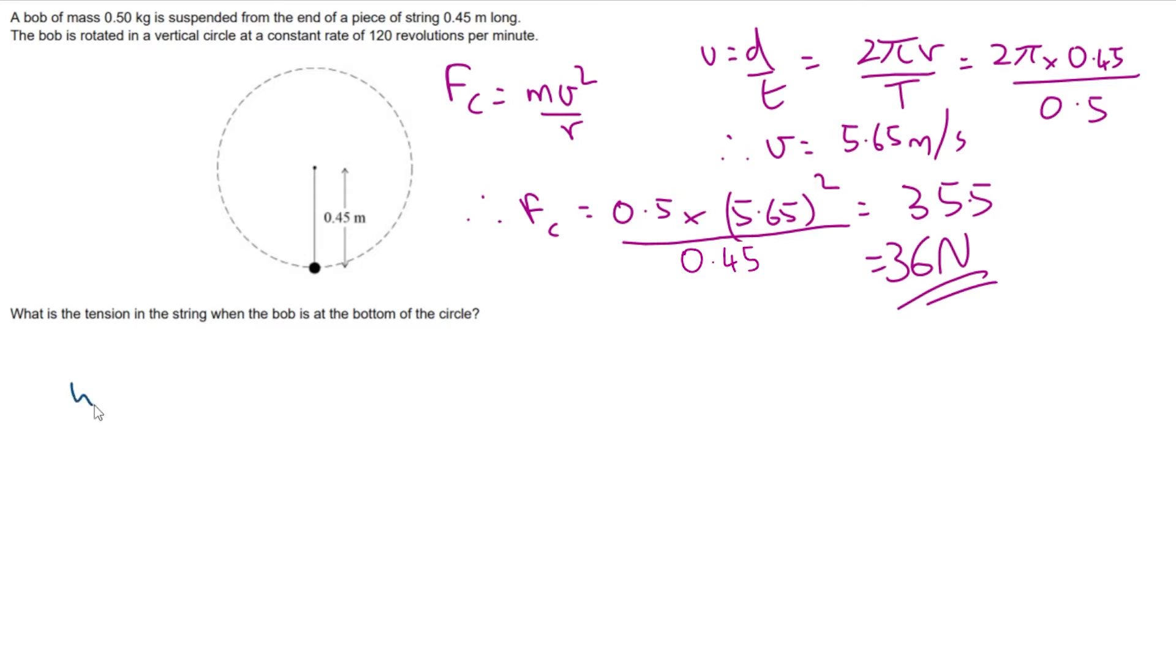Imagine for a moment that the bob is stationary in the bottom position. Naturally enough the tension in the string will be caused by the weight of the bob going downwards, which of course is going to be equal to the tension upwards in the string which is what we want.